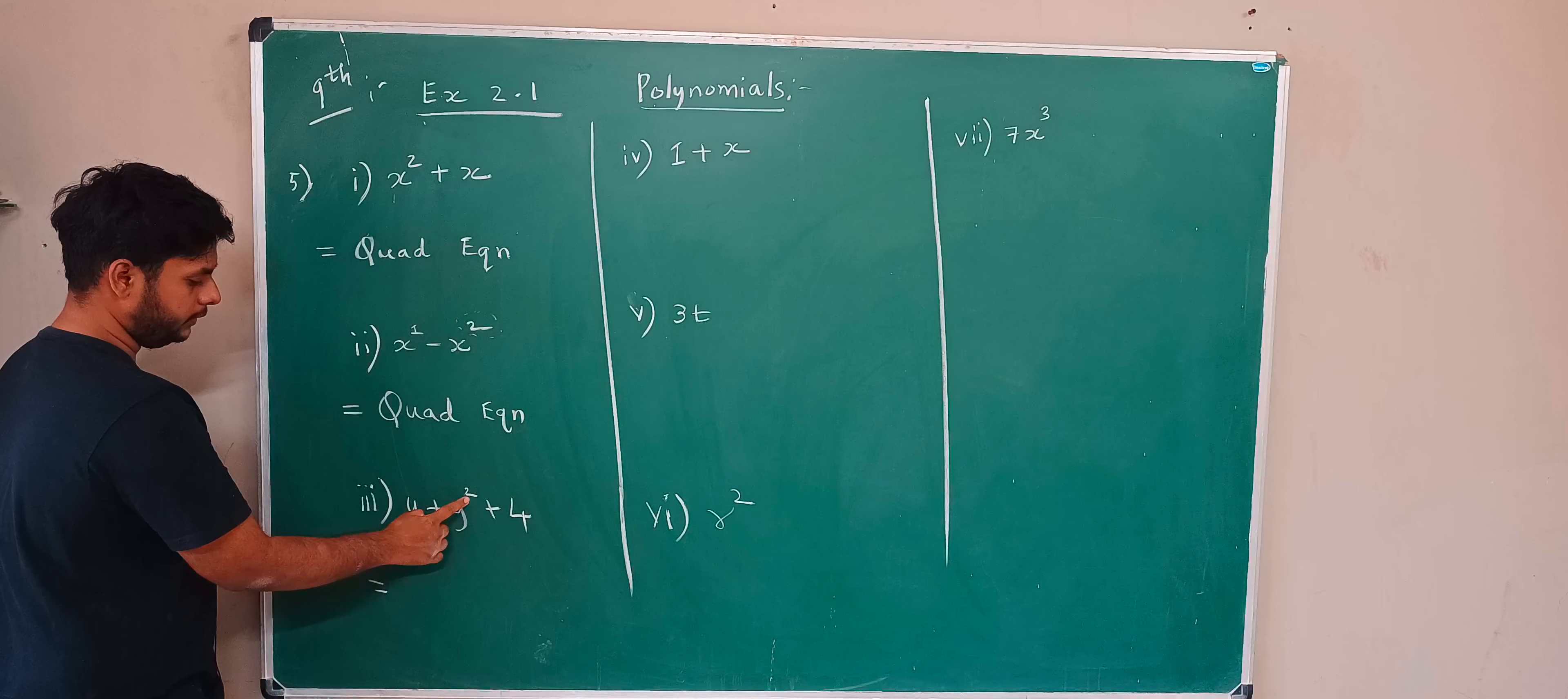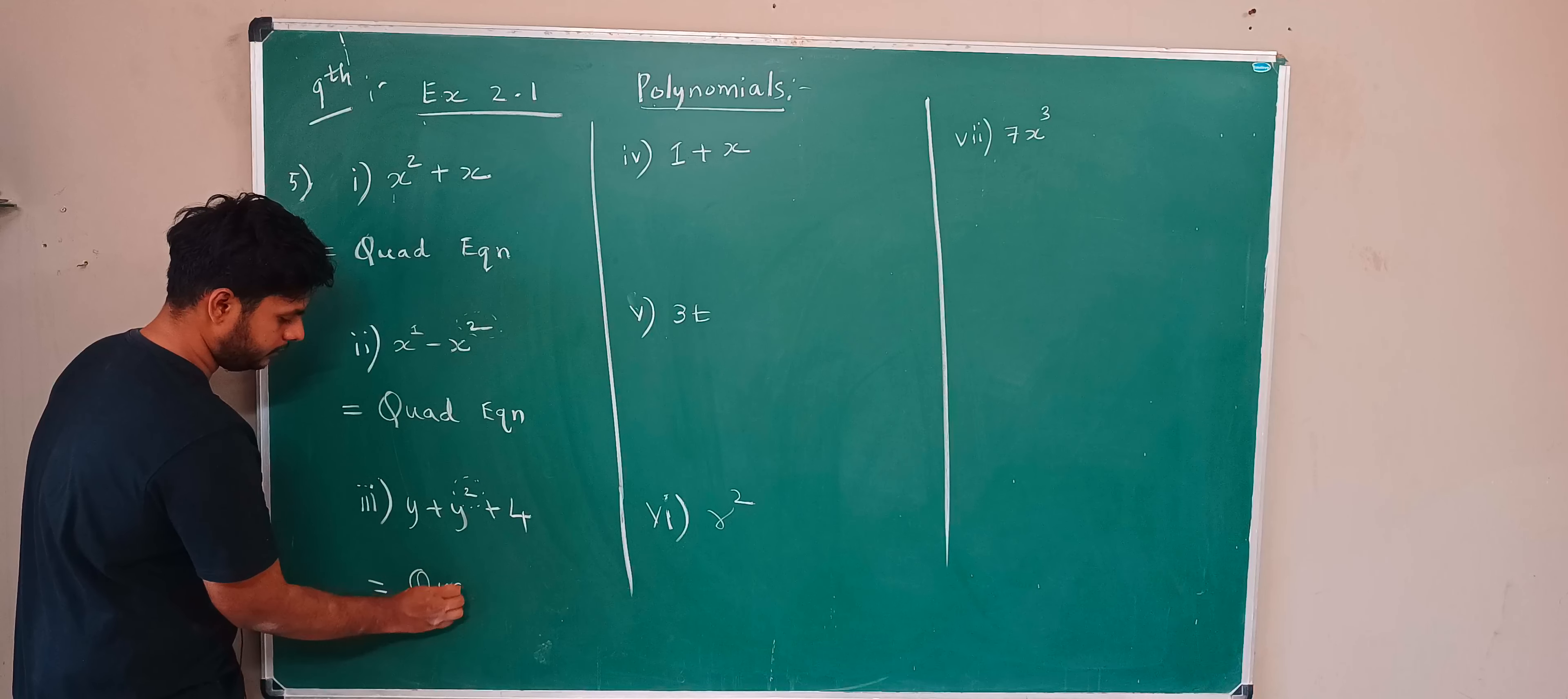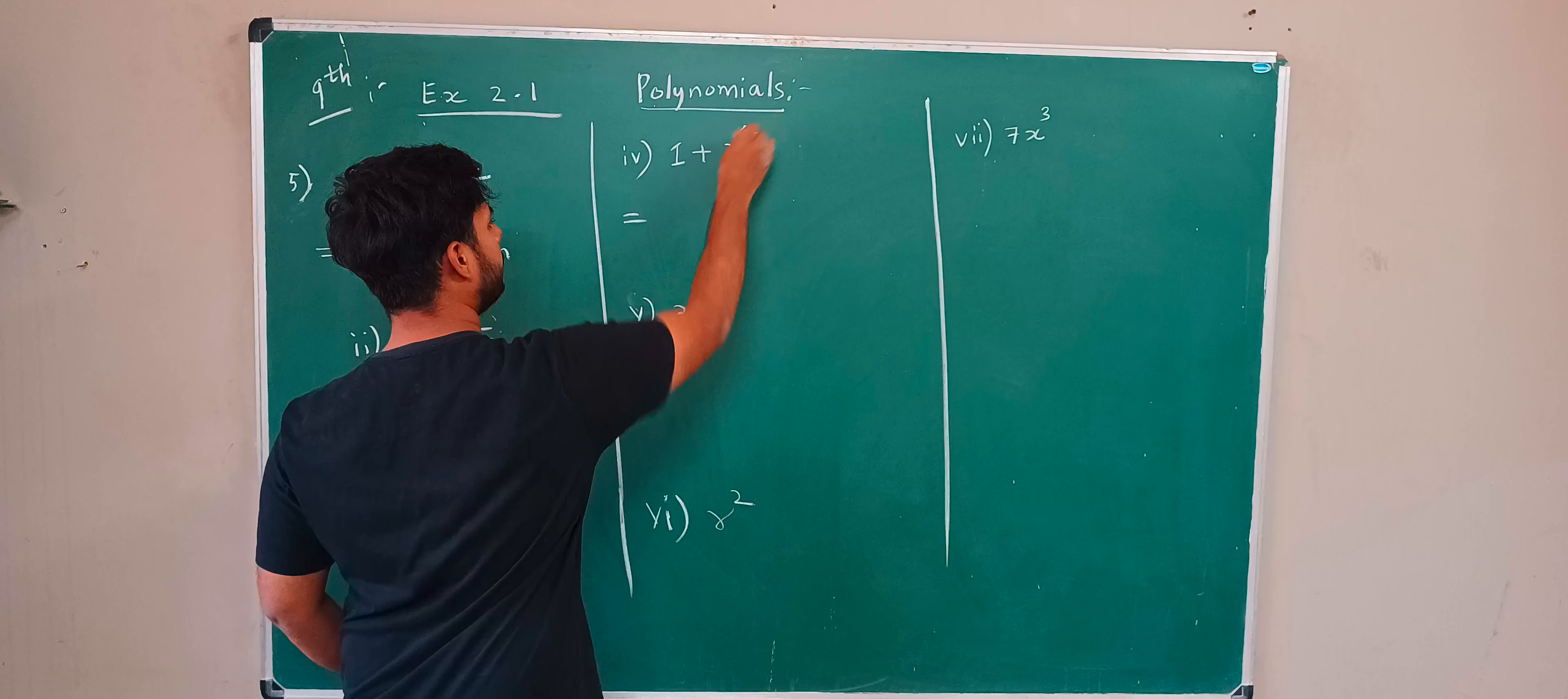Next, here 2 is there, here 1 is there, here variable is only not there. So this is the bigger, so this is 2. Two means what? The quadratic equation. Next, 1 plus x. x means what? x power 1.